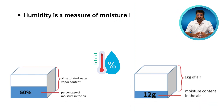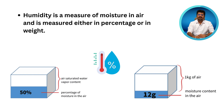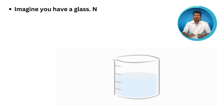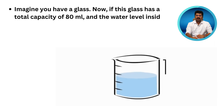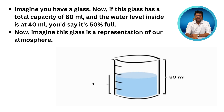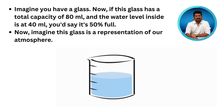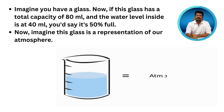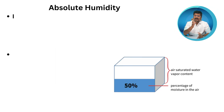Humidity is a measure of moisture in the air and is measured either in percentage or in weight. Imagine you have a glass of water. If this glass has a total capacity of 80 ml and the water level inside is 40 ml, you would say it's 50% full. Now imagine this glass is a representation of our atmosphere.